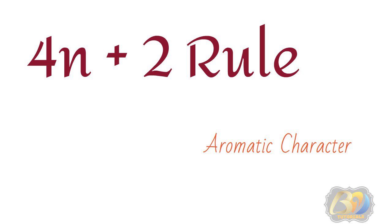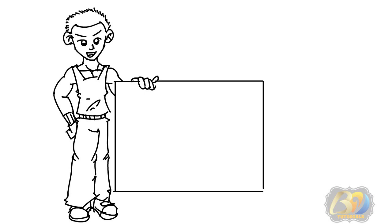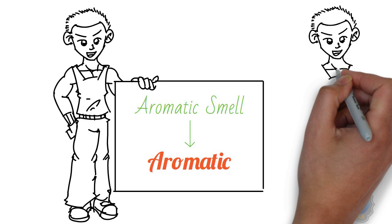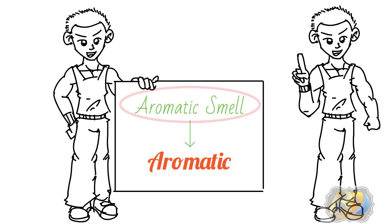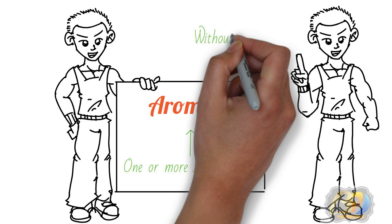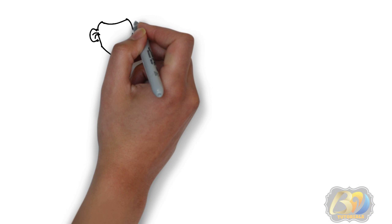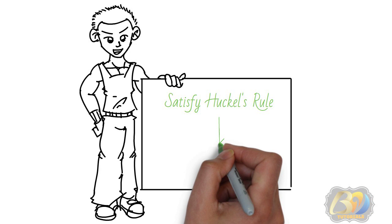How do we decide whether a compound is aromatic or non-aromatic? Different criteria exist. Initially, compounds which possessed an aroma smell were considered aromatic. Later, many organic compounds were discovered that have an aroma smell but were non-aromatic — for example, esters. Then, compounds containing one or more benzene rings were considered aromatic. But again, many compounds were discovered without a benzene ring that are still aromatic — for example, heterocyclic compounds like furan, thiophene, and pyridine. Nowadays, compounds which satisfy Hückel's Rule are considered aromatic.